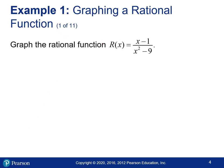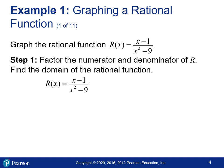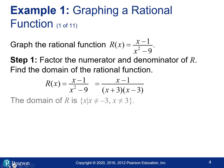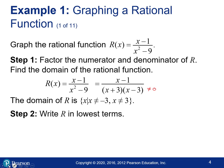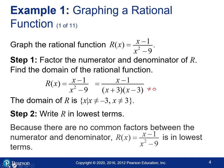We're going to graph the first function. The first thing we're going to do is factor the numerator and the denominator and see if any factors divide out — this will also tell us about our domain. On the bottom we have (x+3)(x-3), so the domain is all real numbers except those values that make the bottom zero. You don't want the denominator to be zero because then the function would be undefined, and those values give us our vertical asymptotes. Our function is already in lowest terms because nothing divided out.